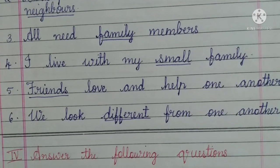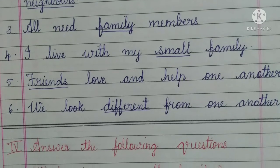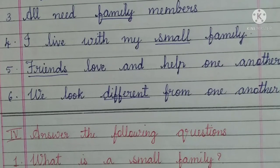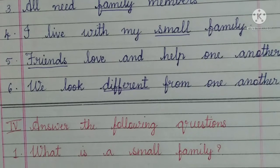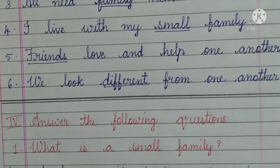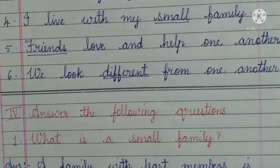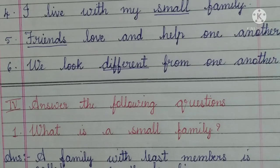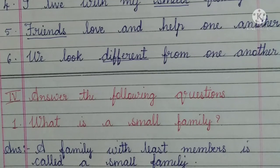Number four, I live with my blank family — small family. Number five, friends love and help one another. Number six, we look blank from one another — different.